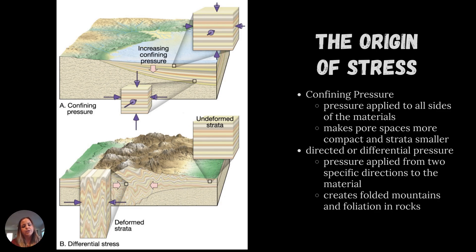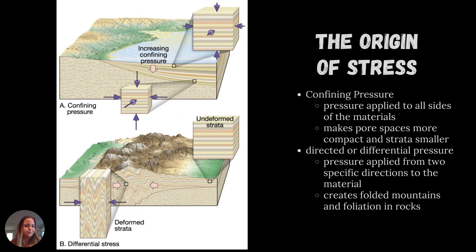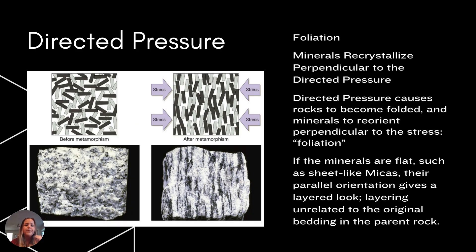With directed or differential pressure from just two sides, you end up with interesting fabric in the rock, including things like folds and foliation. We've talked about folds before with crustal deformation. Foliation is where minerals align themselves perpendicular to that stress and parallel to each other. Foliation results from directed pressure where crystals in the rock align parallel to each other and perpendicular to the line of stress.